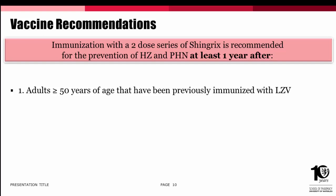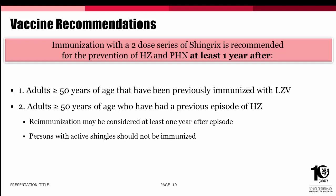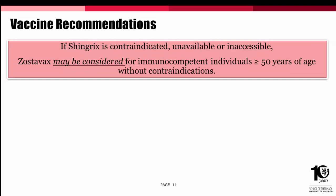This differs from the American recommendations of the Advisory Committee on Immunization Practices (ACIP), which recommends Shingrix be given at least two months after Zostavax administration, based on expert opinion. Those who have had a previous episode of shingles can also be immunized with Shingrix at least one year after their shingles episode. If a patient is currently experiencing shingles, they cannot be immunized. If Shingrix is contraindicated, unavailable, or inaccessible, Zostavax may be considered for immunocompetent individuals 50 years of age and older without contraindications.